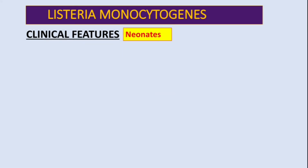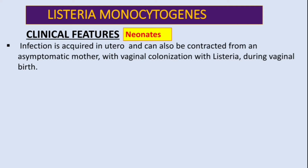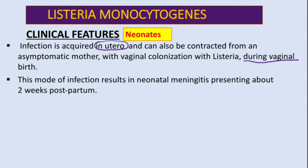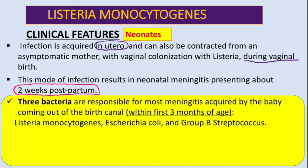The second group is neonates. Infection is acquired in utero and can also be contracted from an asymptomatic mother with vaginal colonization with listeria during vaginal birth. This mode of infection results in neonatal meningitis presenting about two weeks after birth.